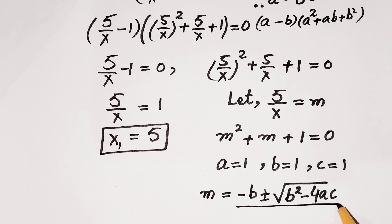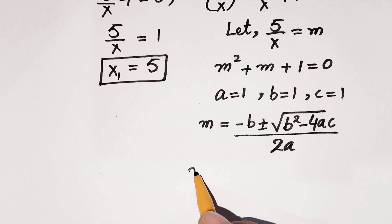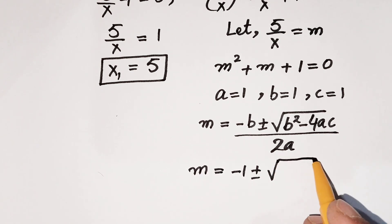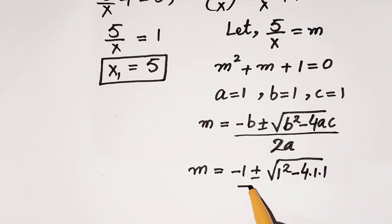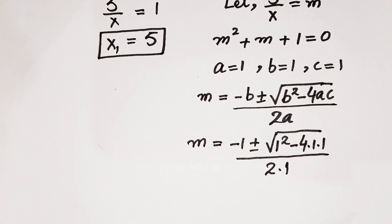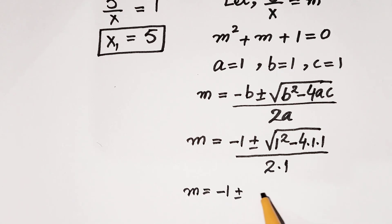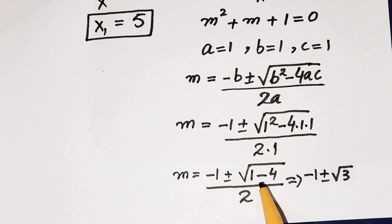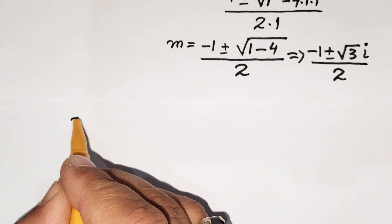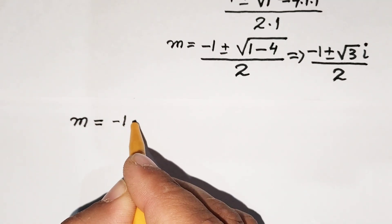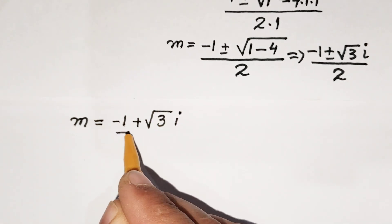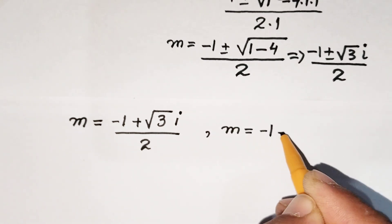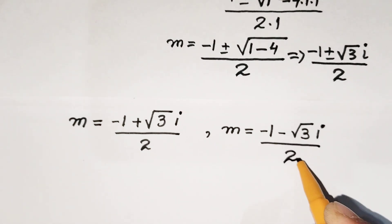Using the quadratic formula, m equals minus b plus or minus square root of b squared minus 4ac, all over 2a. Putting in values: m equals minus 1 plus or minus square root of 1 minus 4, all over 2. That gives minus 1 plus or minus square root of minus 3 over 2, so m equals (minus 1 plus or minus square root of 3 times i) over 2.